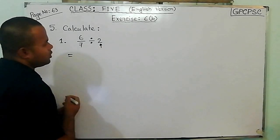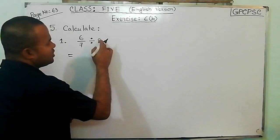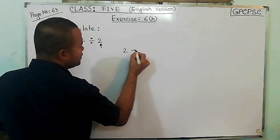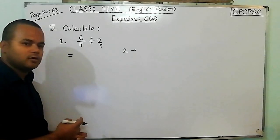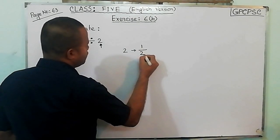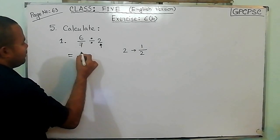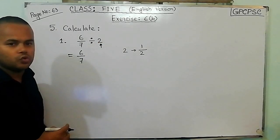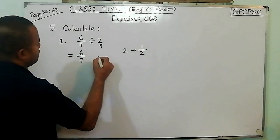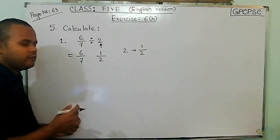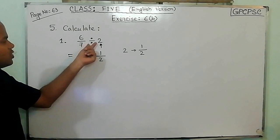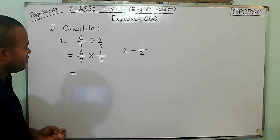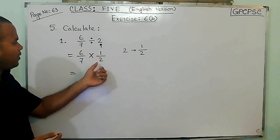So here, 2 — the reciprocal of 2 — we can convert this into its reciprocal. If you convert this, 6 by 7 division 2 into multiplication, then we have 1 by 2. So here we have 6 by 7, and the reciprocal of 2, that is the inverse of 2. Inverse of 2 is 1 by 2. Now you have to change the sign — you have to change division into multiplication.